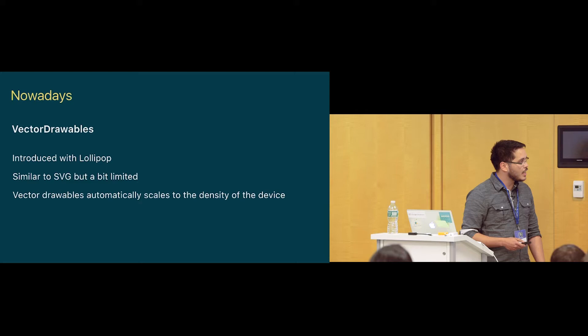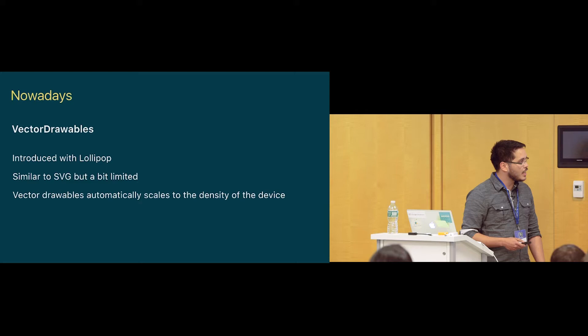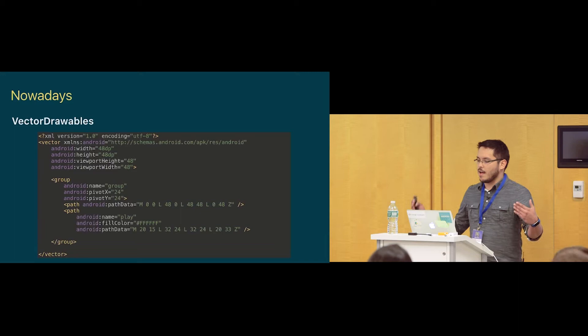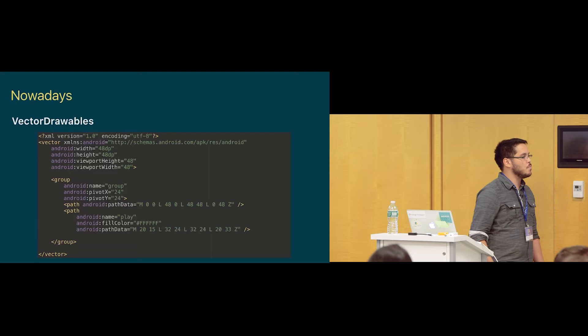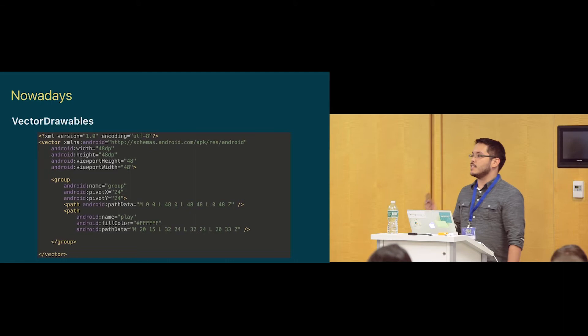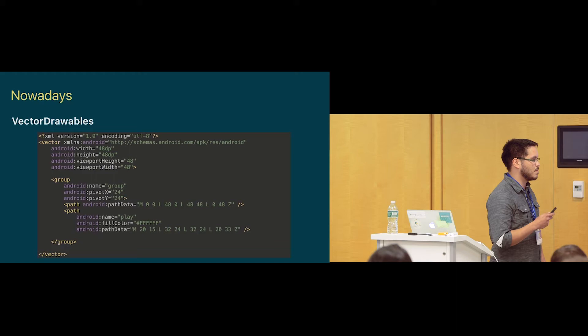Vector drawables scale very well and can be more complex. This is what a vector drawable looks like: we can have the vector with its height and width, we have the group, and we can have path. That's where the magic happens in the path, and we're going to understand how it works so we can make animations very soon.